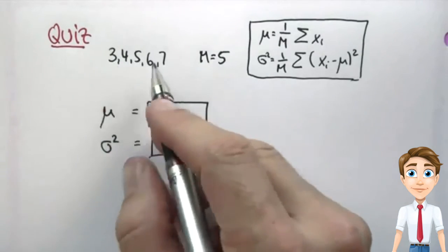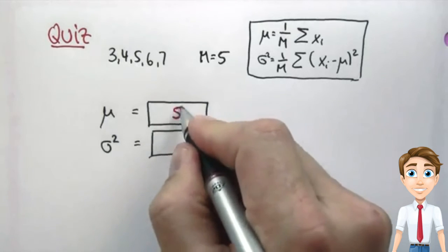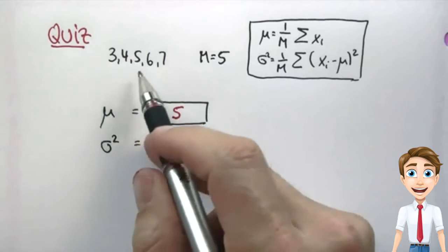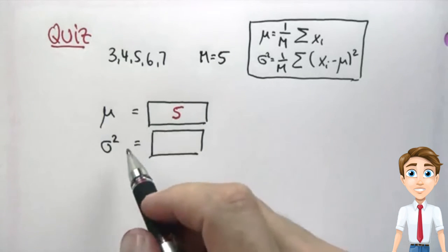So the mean is obviously 5, it's the middle value over here. If I add those things together, I get 25 and divide by 5, the average value over here is 5.